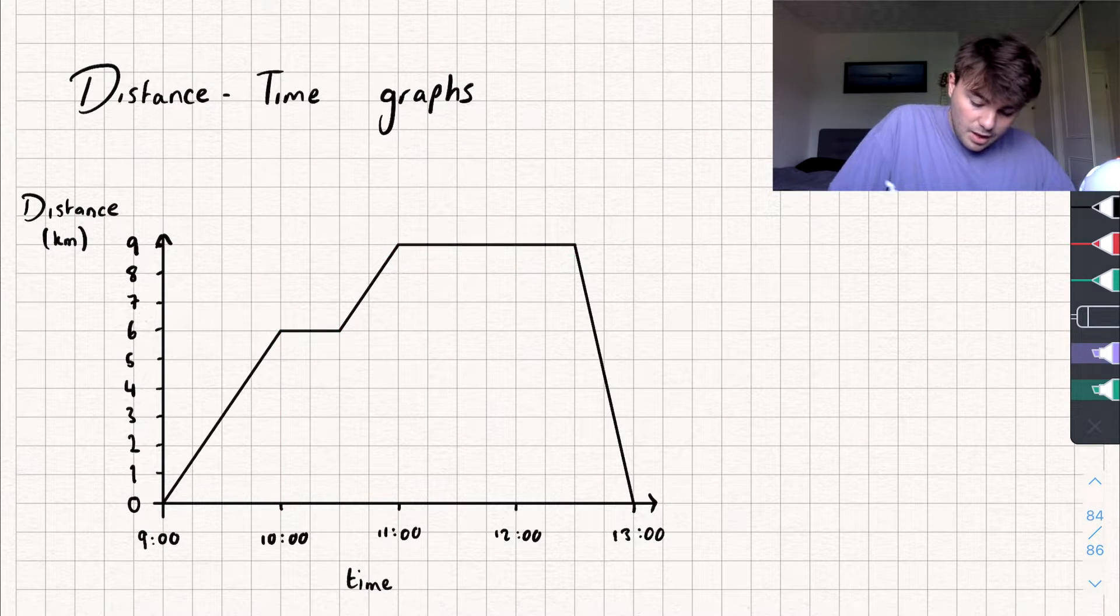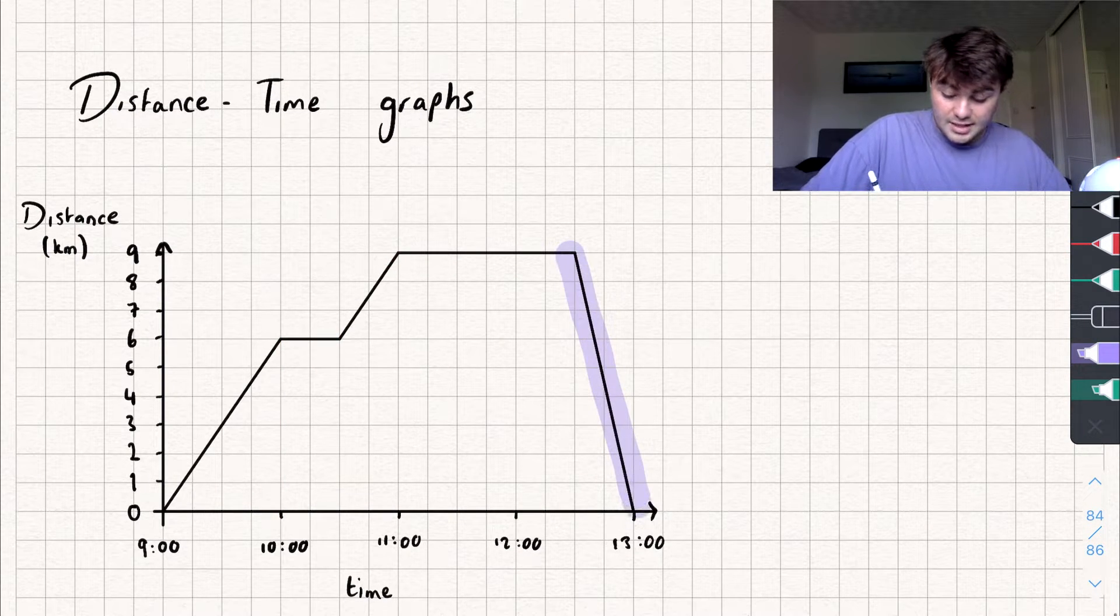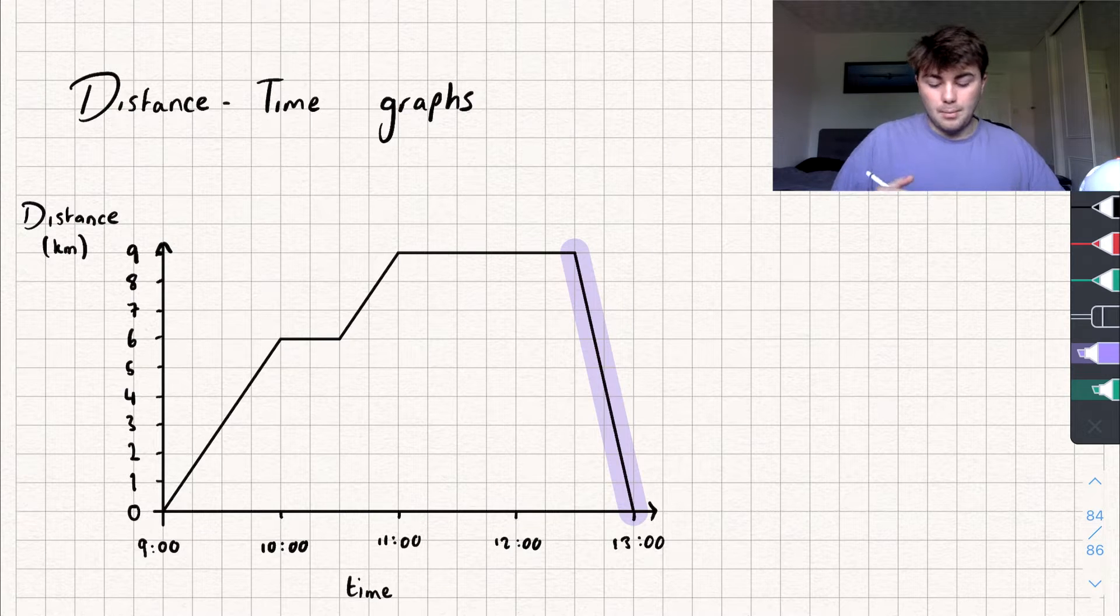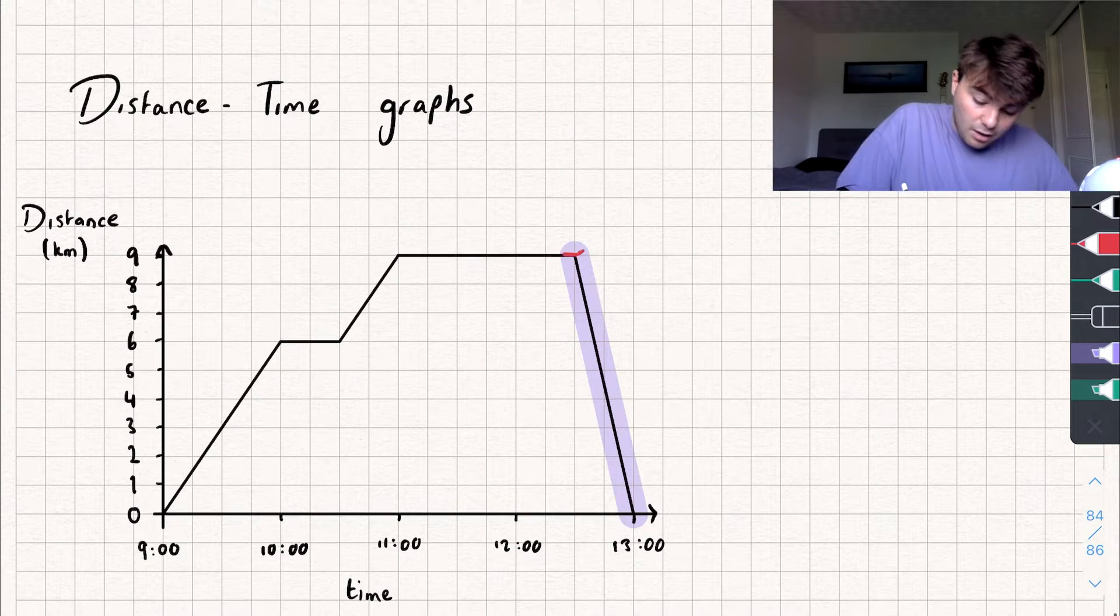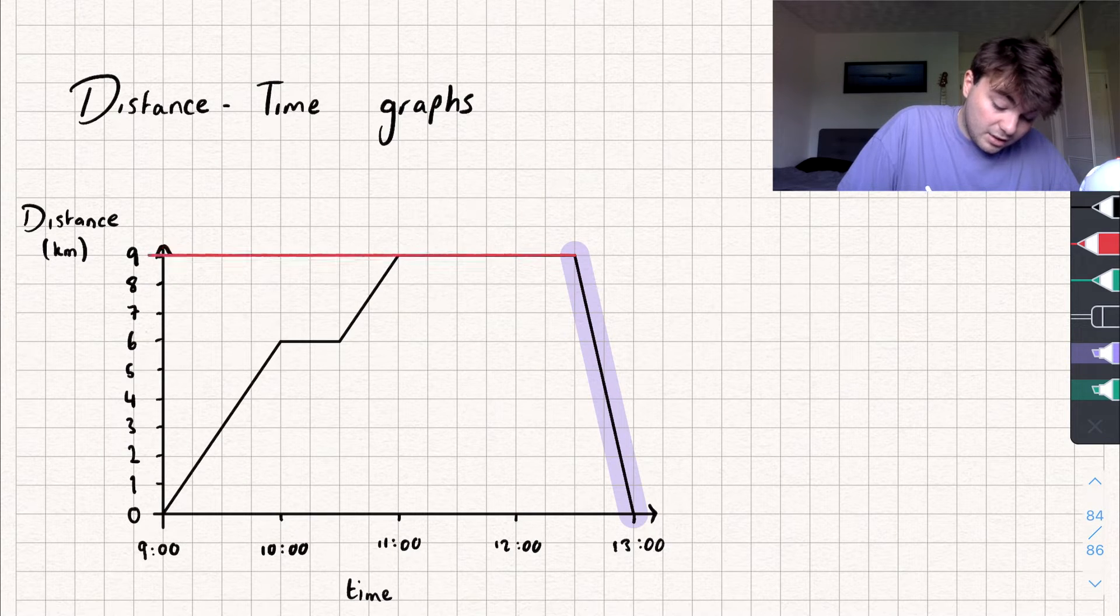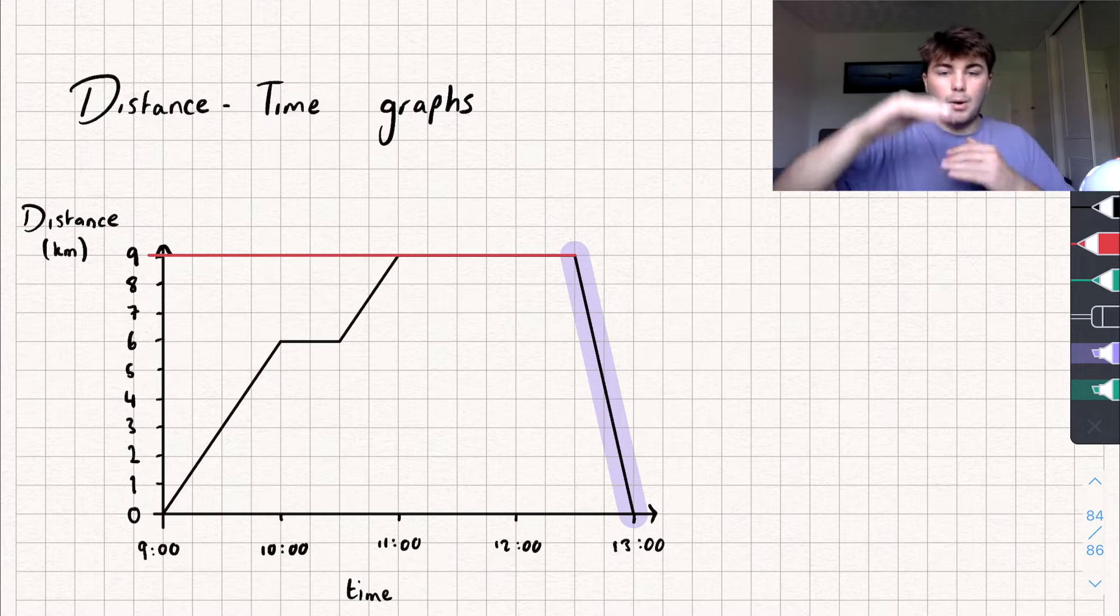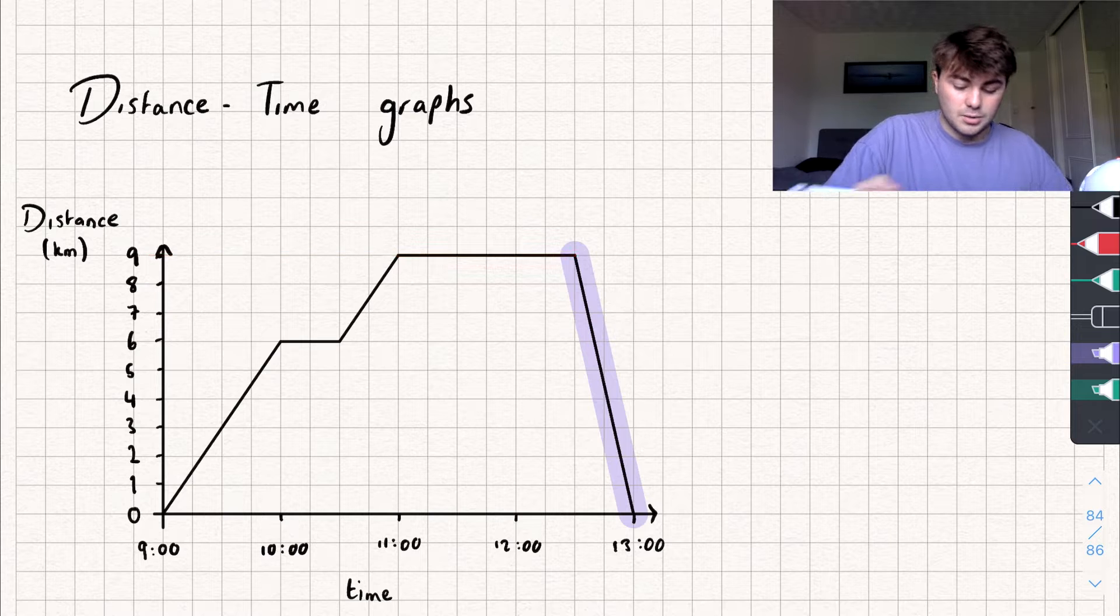Finally, if we've got a decreasing or negative gradient part of our graph, like this bit I've highlighted, that means we're coming back. You can see at the start of this decreasing line I was 9km away, but I went all the way down to 0, so I must have walked home.